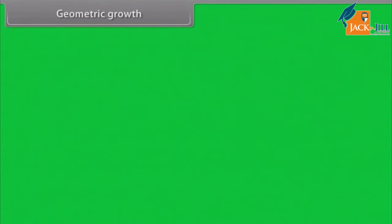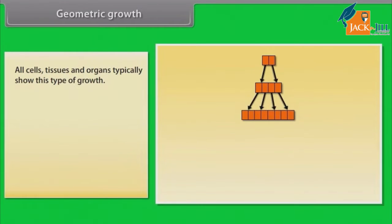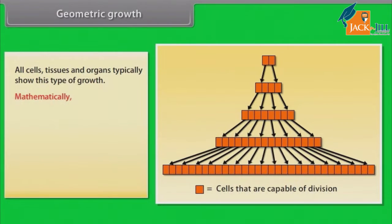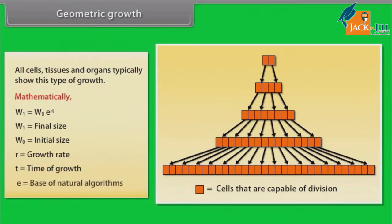Geometric growth: Initial growth is slow, followed by a rapid increase in growth, followed by a phase where growth slows down. All cells, tissues, and organs typically show this type of growth. Mathematically, W1 = W0 × e^(RT), where W1 is the final size, W0 is the initial size, R is the growth rate, T is the time of growth, and e is the base of natural logarithms.